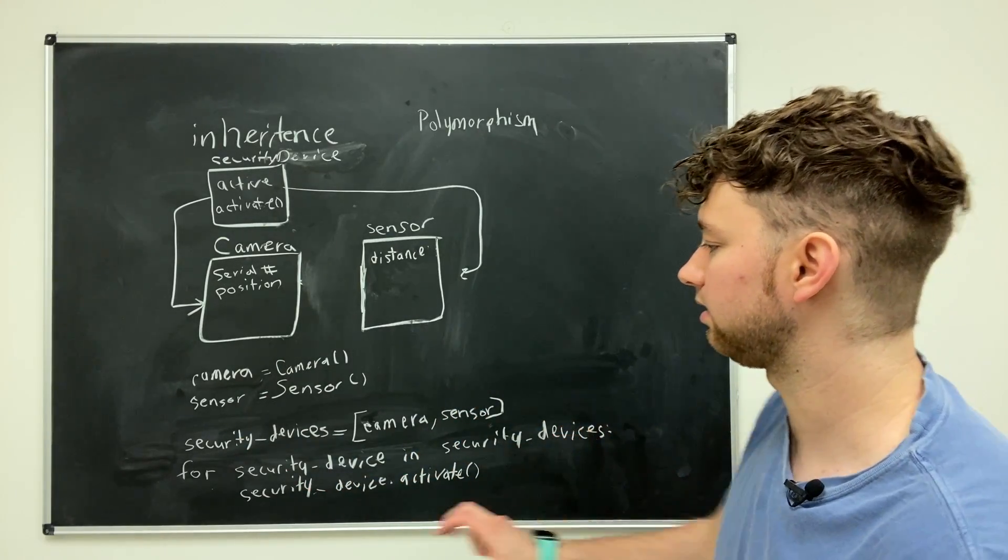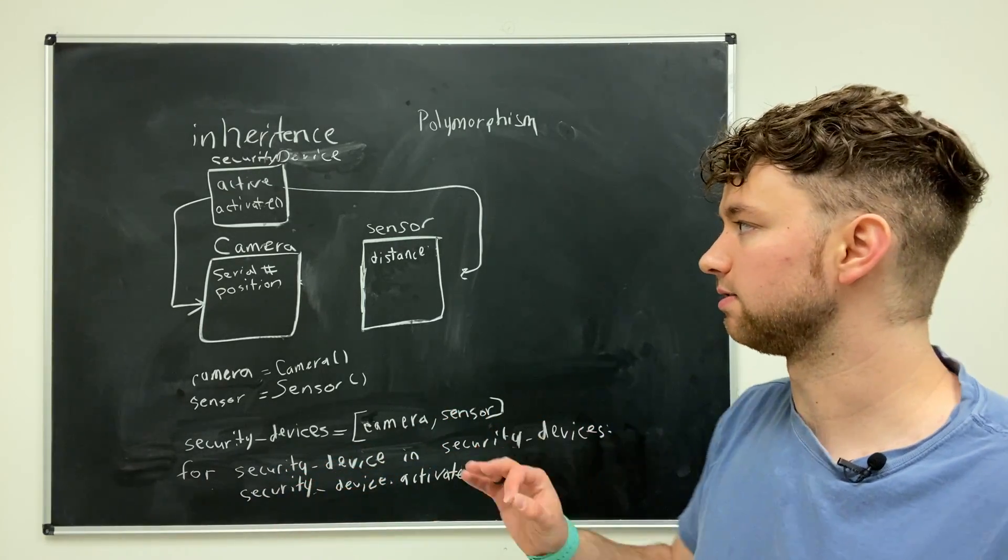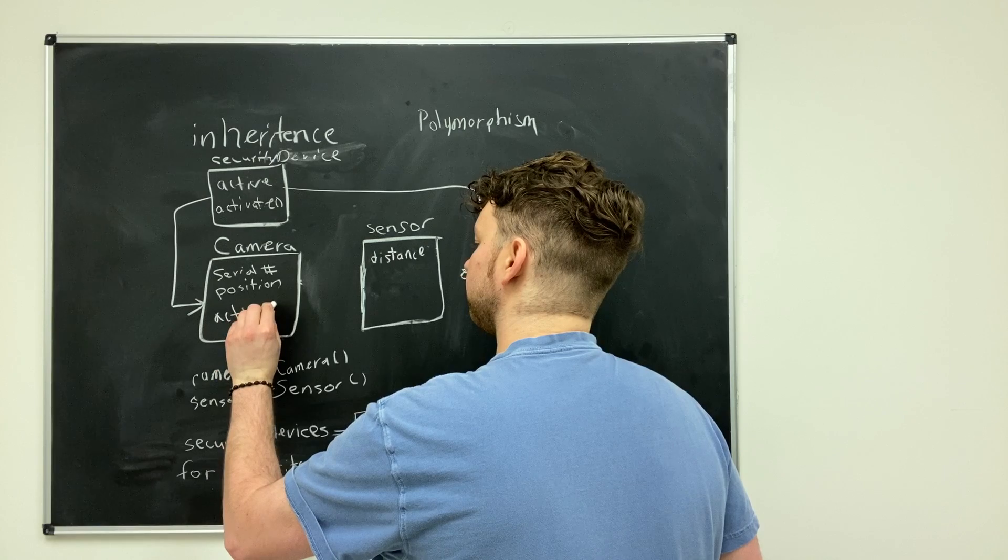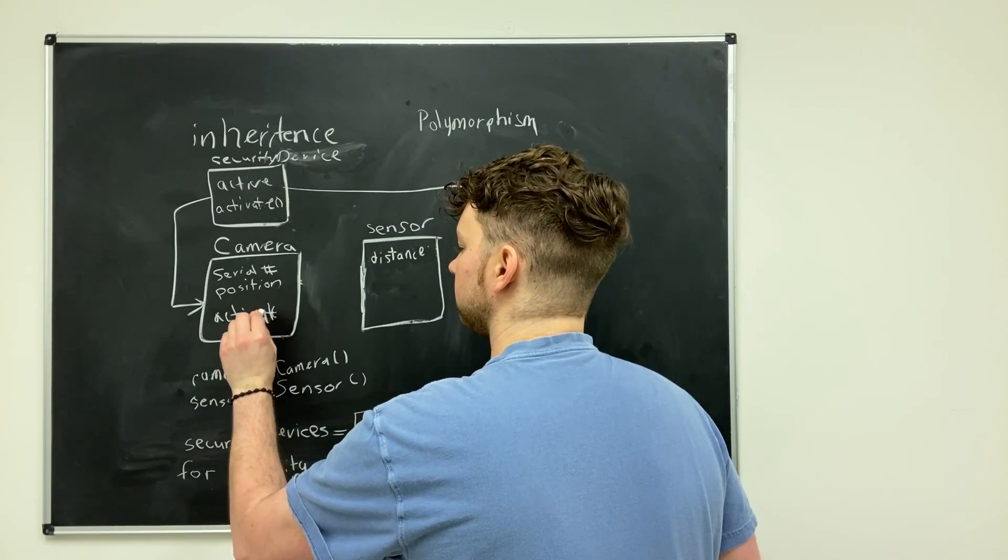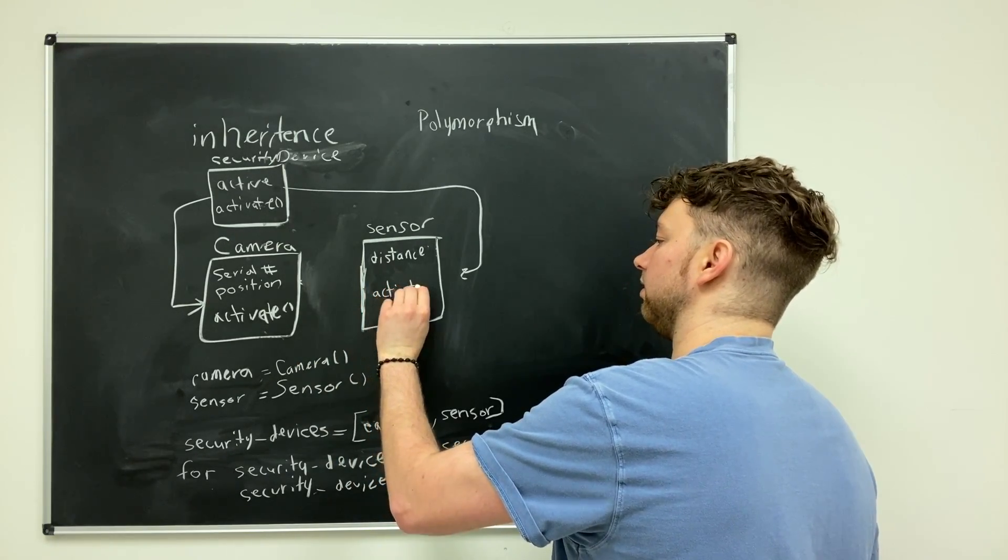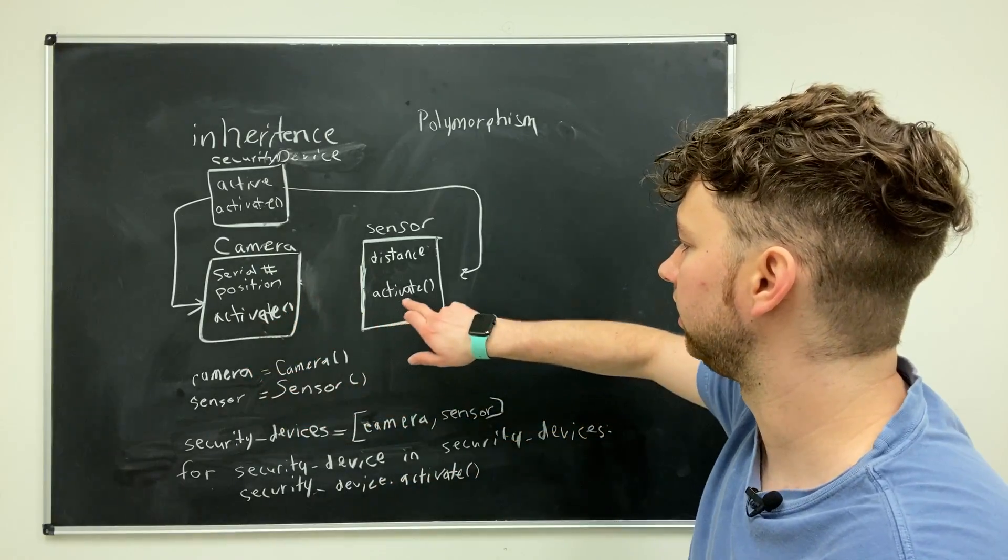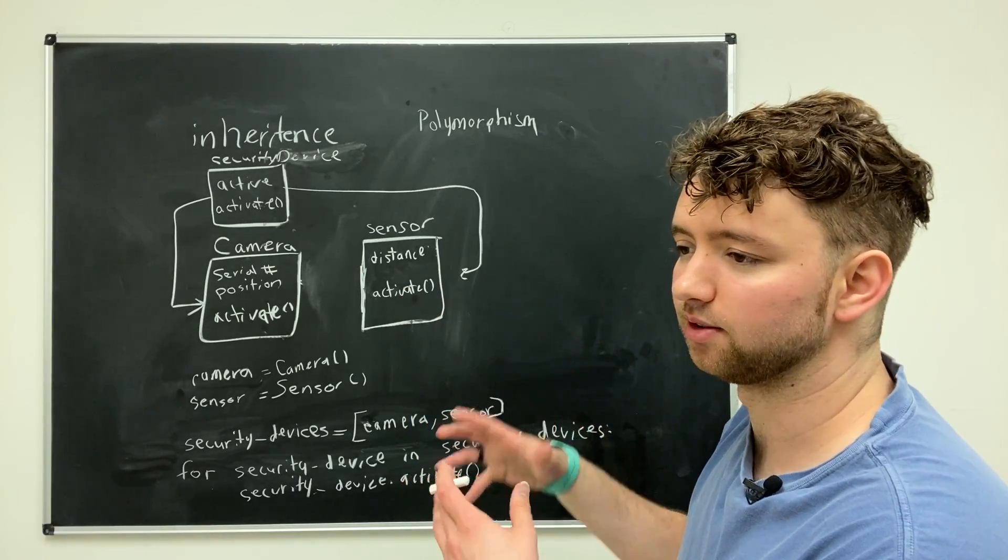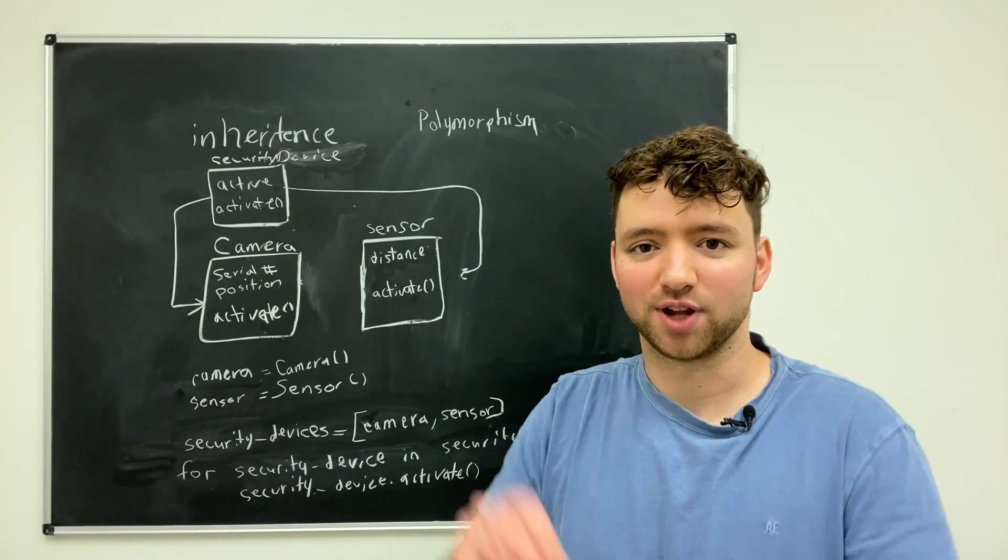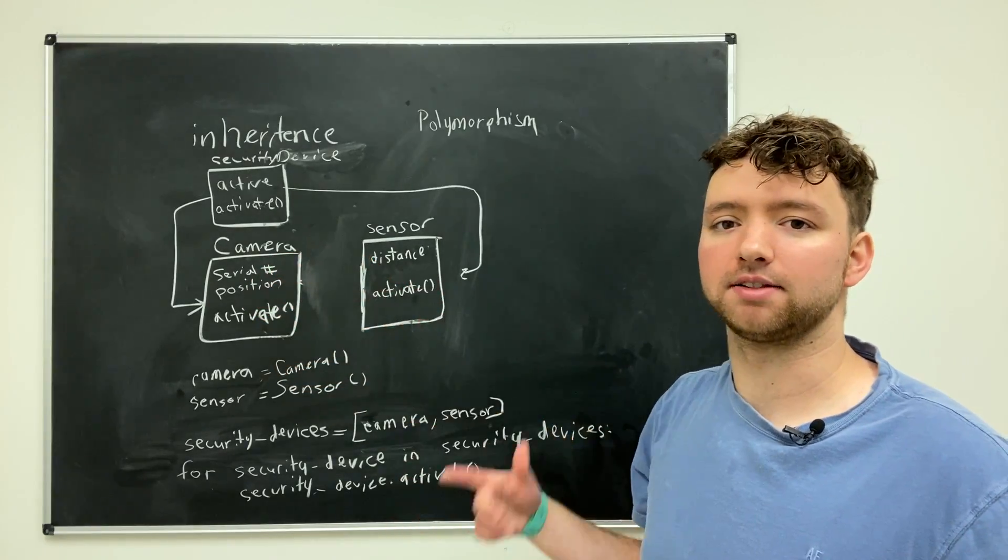And the benefit here is that we can actually be more specific and define new activate methods in these derived classes. And this loop will invoke the more specific version. So the way to think about this is you're basically saying, Hey, every single security device, I want you to activate. I don't care how you activate as long as you activate. So we can define basically an overrided version, activate inside a camera and an overrided version inside of sensor. So in here, this might reset the camera's position or do something. And in here, this might configure the sensor's distance or connect it to the loudspeaker.